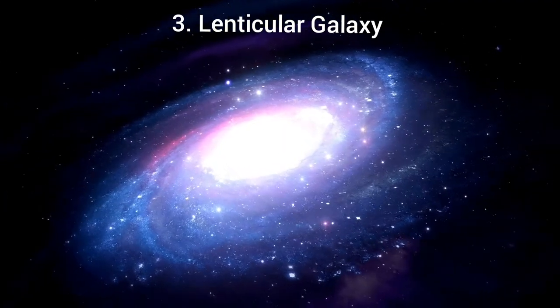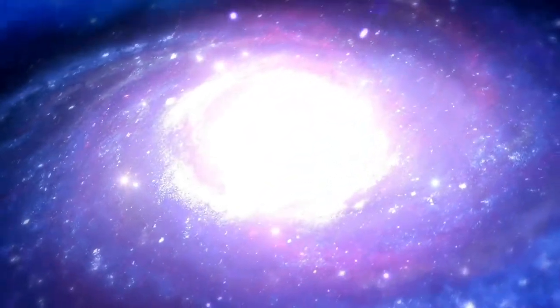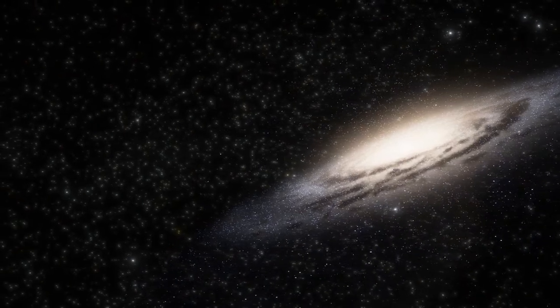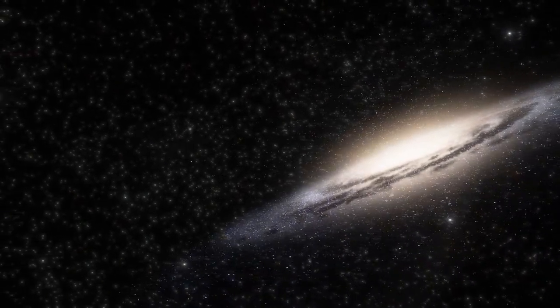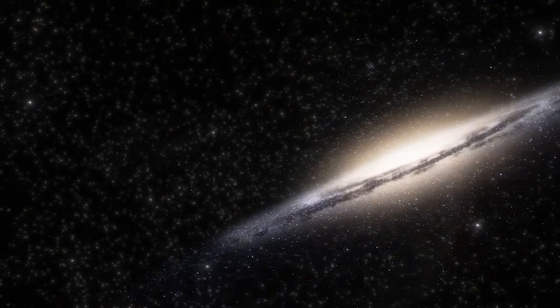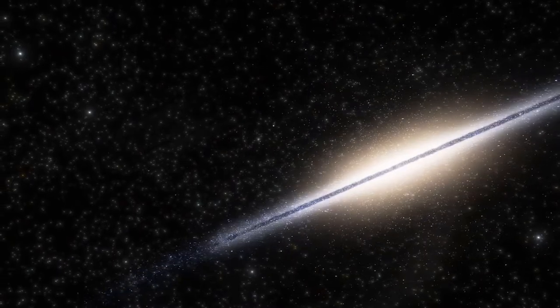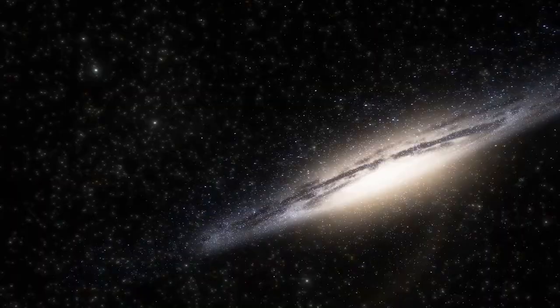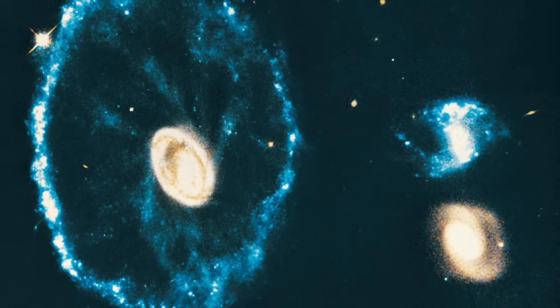Number 3: Lenticular galaxy. A lenticular galaxy is a type of galaxy intermediate between an elliptical and a spiral galaxy in classification. Lenticular galaxies have a bright central bulge surrounded by an extended disc-like structure that have used up or lost most of their interstellar matter, and therefore have very little ongoing star formation. Cartwheel galaxy is an example of a lenticular galaxy.